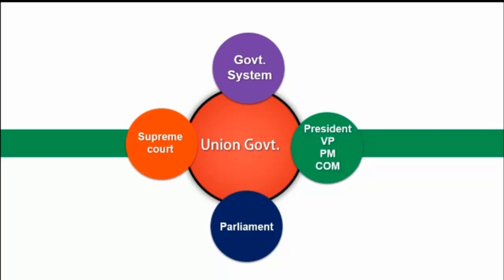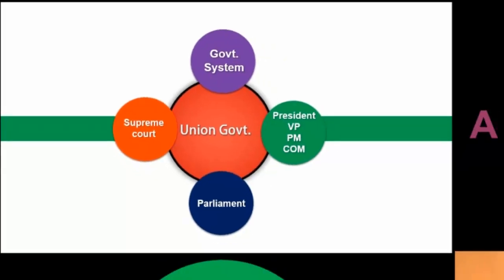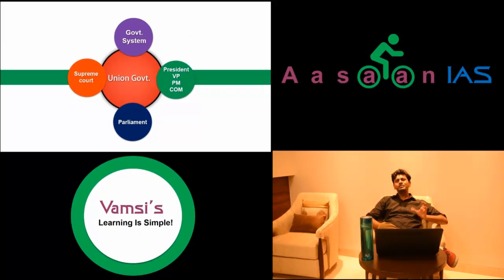Then the Supreme Court — we understand the judges and Chief Justice of India, their appointment, the jurisdiction and powers and functions of the Supreme Court, and the removal of judges. So for the union government: system of government about one hour, president/VP/PM/CoM about two hours, parliament about two hours, Supreme Court about one hour — totaling about six to seven hours. If you invest six hours, you can master this important part.